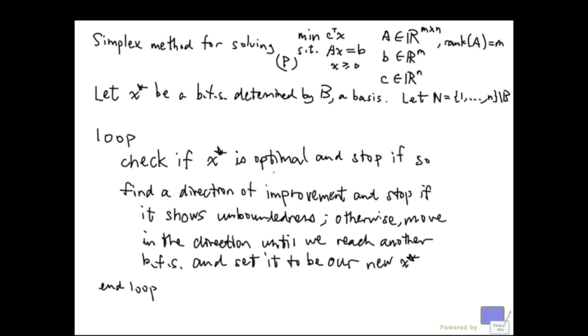The other one is use perturbation, which we have been developing in the last video. So instead of solving this problem, we are going to solve the problem Ax equal to b prime in the constraints. And b prime is going to be b plus A sub B times the column vector epsilon up to epsilon to the m for some very small positive epsilon.